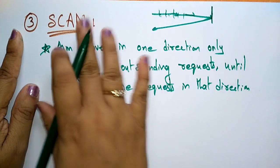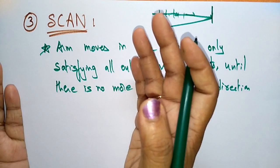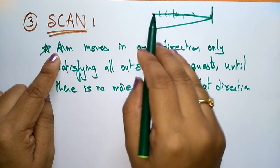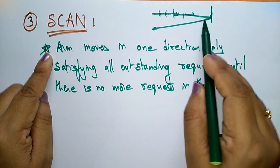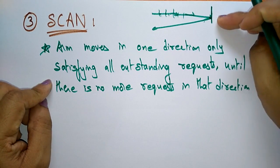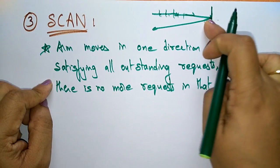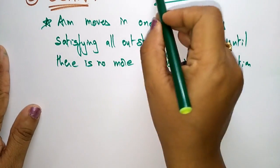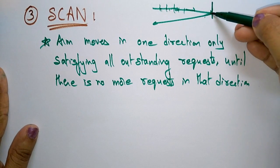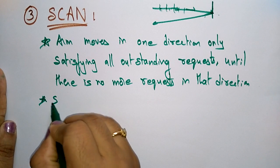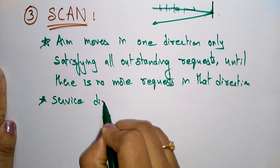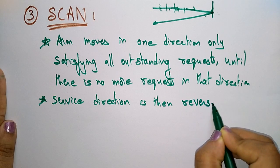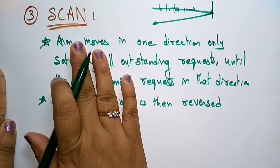The arm moves in one direction, satisfying all outstanding requests until it reaches the end of the track. It then comes back to serve any remaining pending requests. The service direction is then reversed — first serve in one direction, then it is reversed.